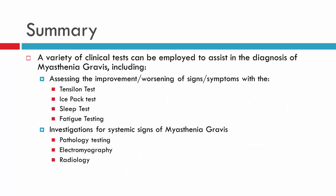In conclusion, we have a variety of clinical tests to assist in diagnosing a patient with Myasthenia Gravis. We can look for improvements or worsening of signs and symptoms using the Tensilon test, ice pack test, sleep test, or fatigue testing. Alternatively, we can look for systemic signs through pathology testing or radiology, or assess the electrical activity of the extraocular muscles via EMG. A reminder that for many of these tests, a negative response sometimes does not mean the patient does not have Myasthenia Gravis — you must look at the complete clinical picture to arrive at your final diagnosis.